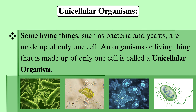Before I start — some living things such as bacteria and yeast are made up of only one cell. An organism or living thing that is made up of only one cell is called a unicellular organism. 'Uni' means one, 'cellular' means cell. So an organism which is based on only one cell is called a unicellular organism.